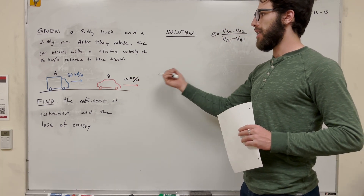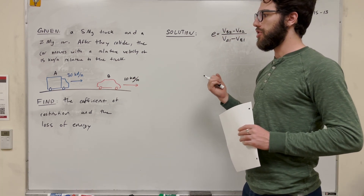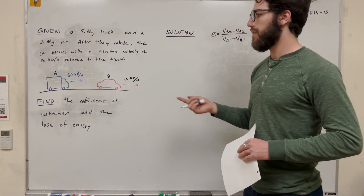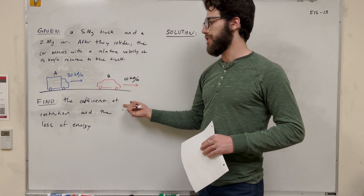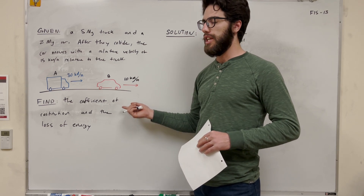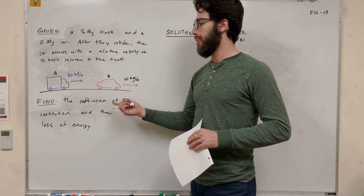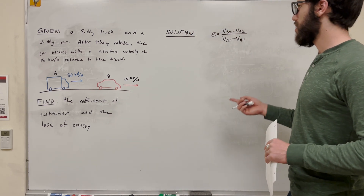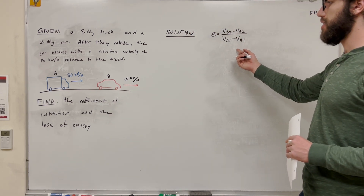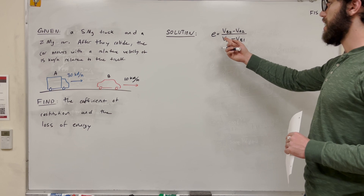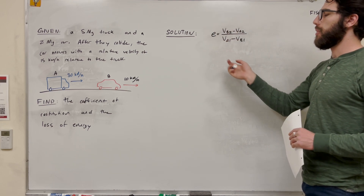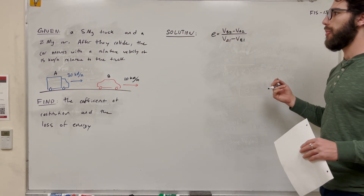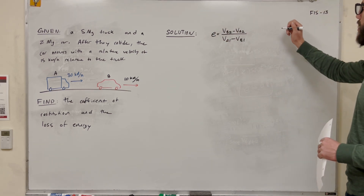So the car is going to go 15 kilometers an hour quicker than the truck after they collide. Our goal is to find, first, the coefficient of restitution, E, and then we want to find the loss of energy. So let's start with the coefficient of restitution. It's this equation here, so we're going to run through it. But first, let's write out what we know initially.